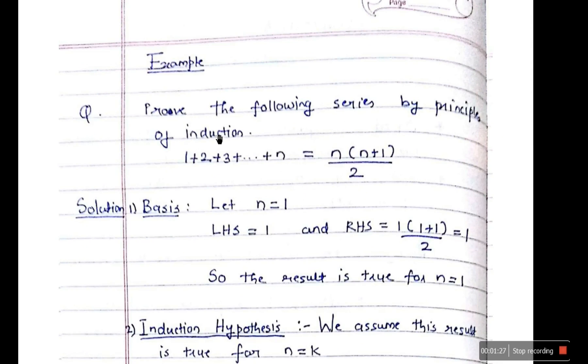So for our example, we are taking this simple one. Prove the following series by principles of induction. So what is the series given to us? 1 plus 2 plus 3 plus dot dot dot till n is equal to n into n plus 1 upon 2. So we have to prove that this series is true.